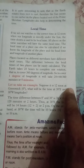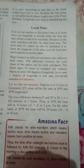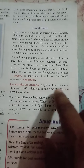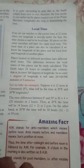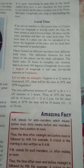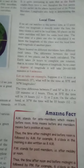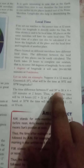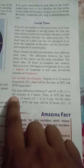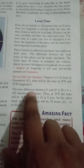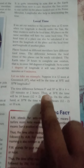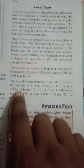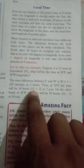Let us take an example. Suppose it is 12 noon at Greenwich, the 0 degree line. What will the time be at 30 degrees East and 30 degrees West? For 30 degrees East, the difference between 0 and 30 degrees is 30 multiplied by 4, which is 120 minutes, or 2 hours. So at 30 degrees East, the time will be 14:00 hours — that is 12 plus 2.